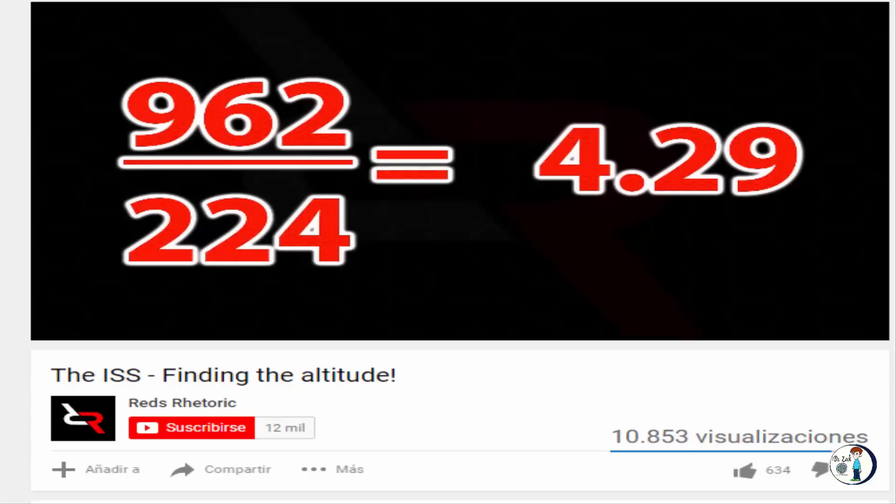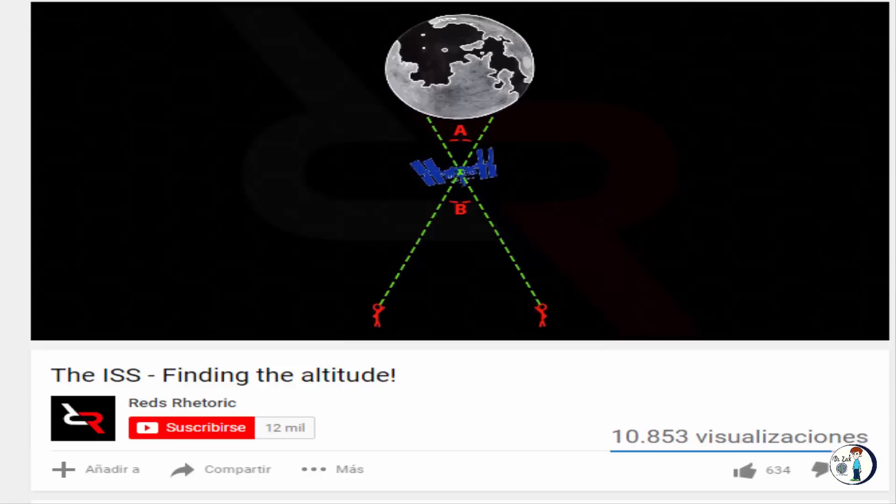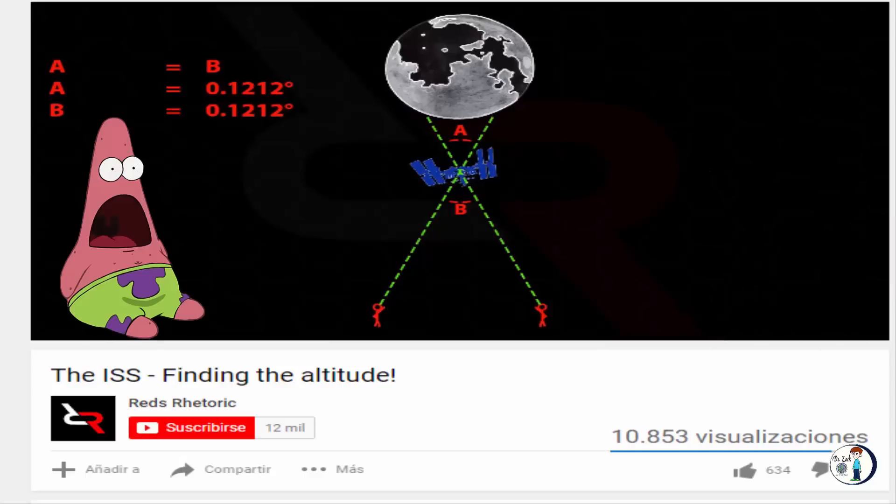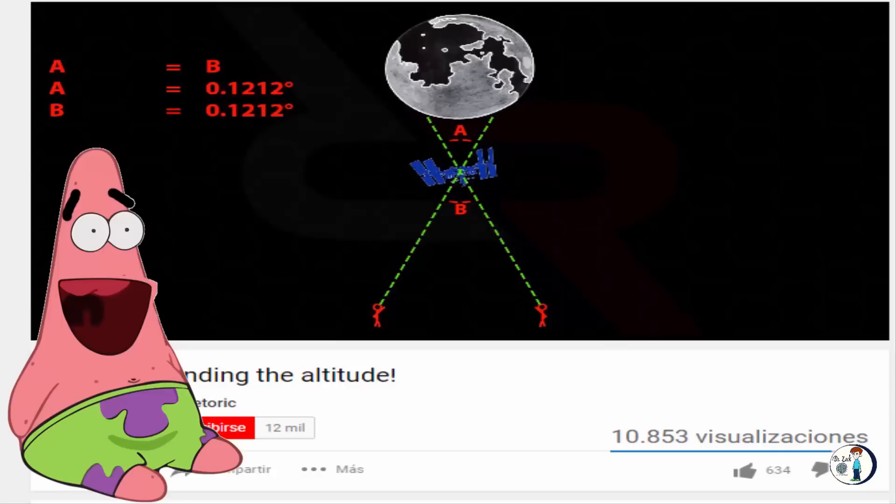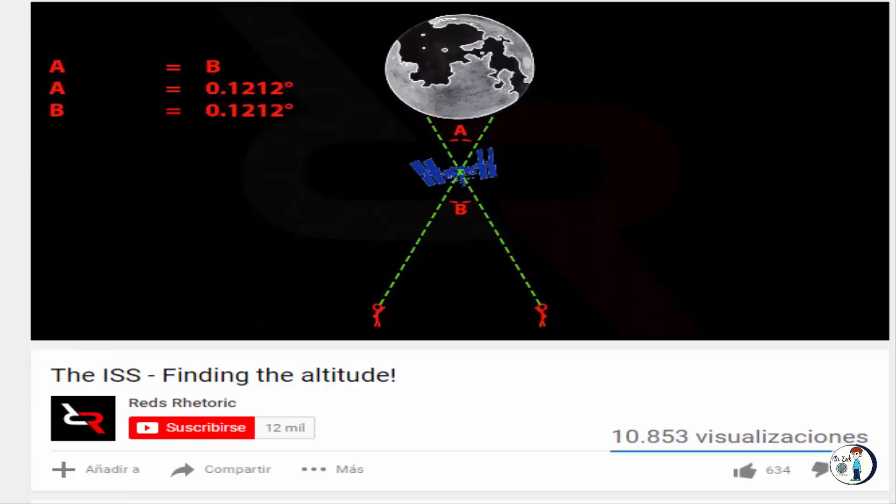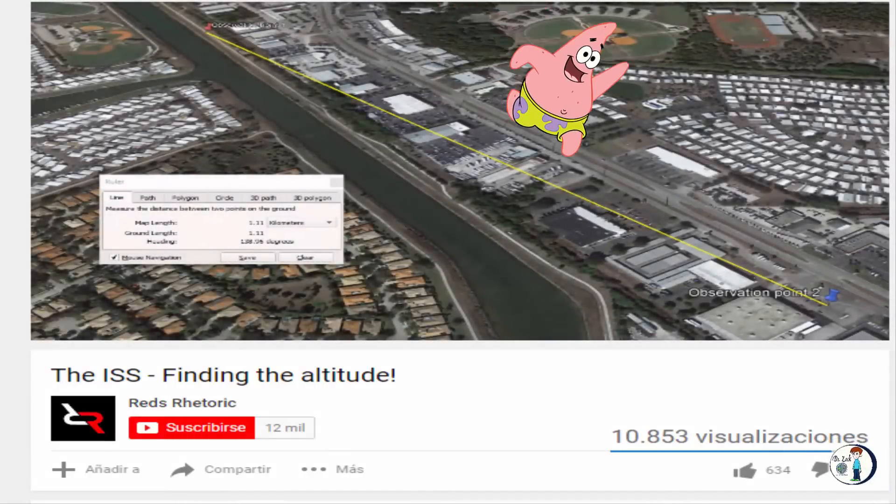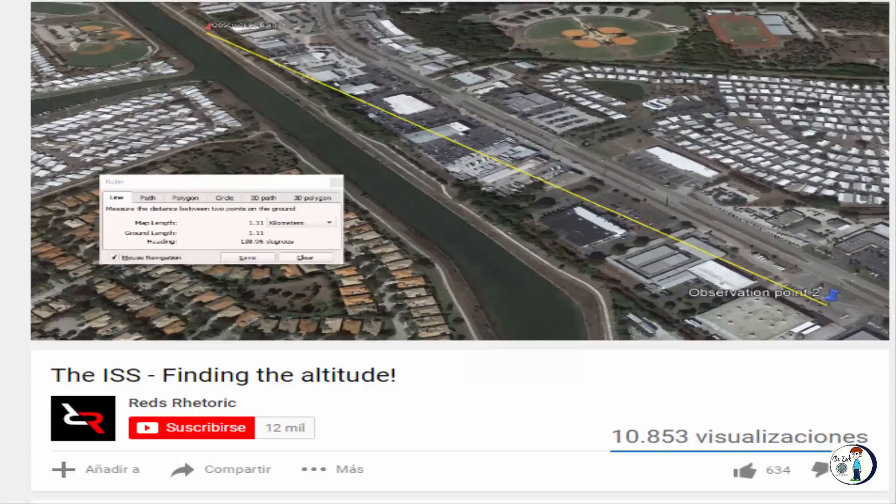So if we take the angular size of the moon as 0.52 degrees and divide it by 4.29, that means angle A comes out to 0.1212 degrees. And since angle A equals angle B, that means B is also 0.1212 degrees. Now we need to find our baseline, the distance between myself and Astronomy Live during our observation. According to Google Earth, we were about 1.11 kilometers apart. Now we have everything we need to do some basic trigonometry.